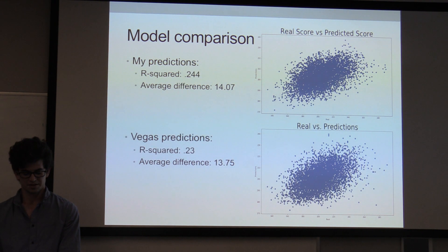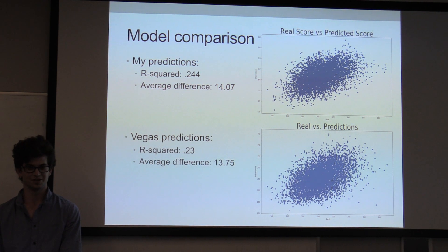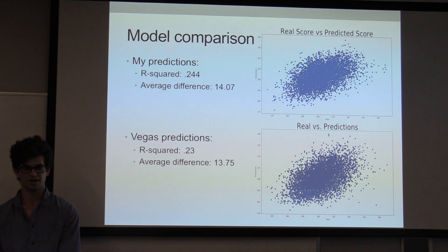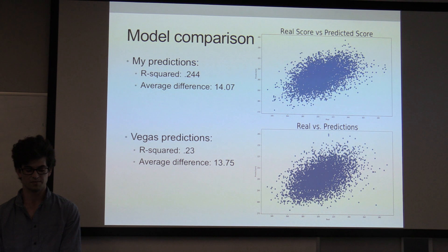Vegas lines are like a multi-billion dollar industry, and their current predictions have an average difference of actual versus predicted scores of 13.75. I have gotten my model down to 14.07, and I want to improve it further.